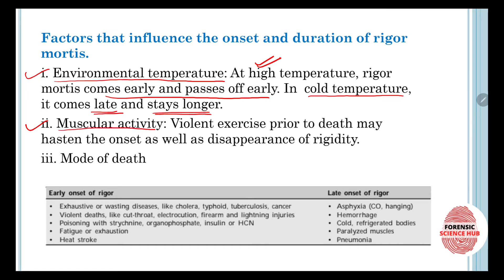The second factor is muscular activity. If there is some kind of violent exercise prior to death, it may hasten the onset as well as the disappearance of rigidity. If there is fast muscular activity before death, it is going to speed up the process of rigor mortis — it is going to come early and disappear early.